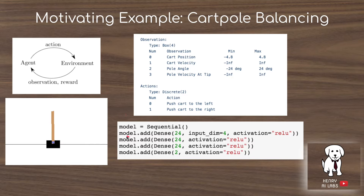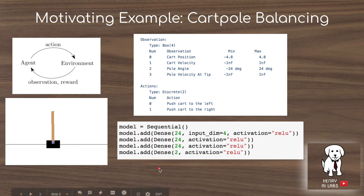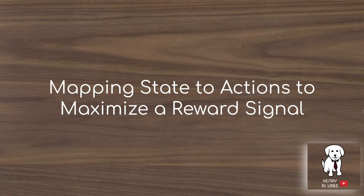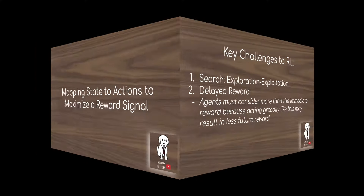This neural network, shown in the Keras framework, has an input dimension of four — the four state variables reshaped to be a vector input to the neural network — and then it outputs two units indicating the actions to take on the cart pole balancing problem. The high-level idea of reinforcement learning is that we're constantly mapping states or observations to actions in order to maximize a reward signal.